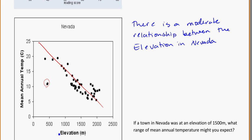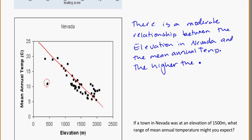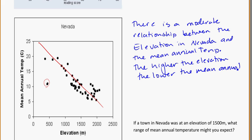So let's say there is a moderate relationship between the elevation in Nevada and the mean annual temperature. The higher the elevation — at 2,000 meters — generally the mean annual temperature is lower, compared to being at a low elevation of 500 with a mean annual temperature of 20. So the higher the elevation, the lower the mean annual temperature.